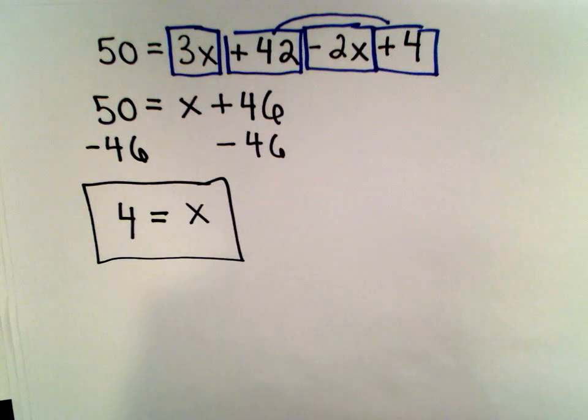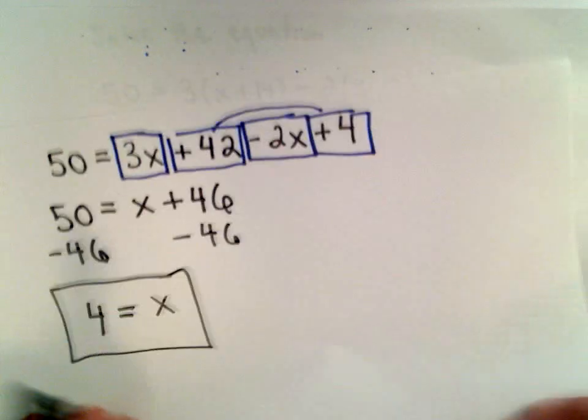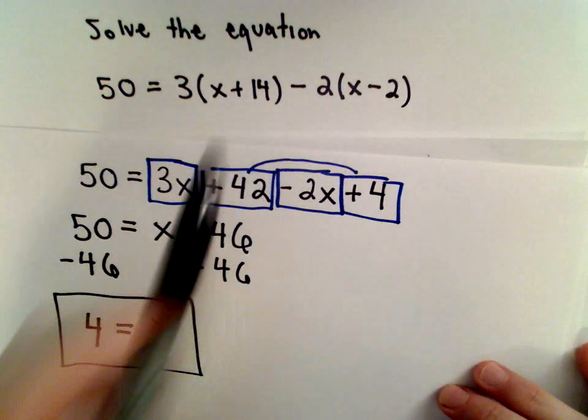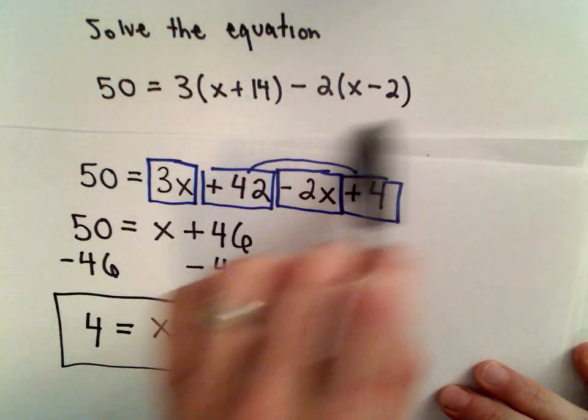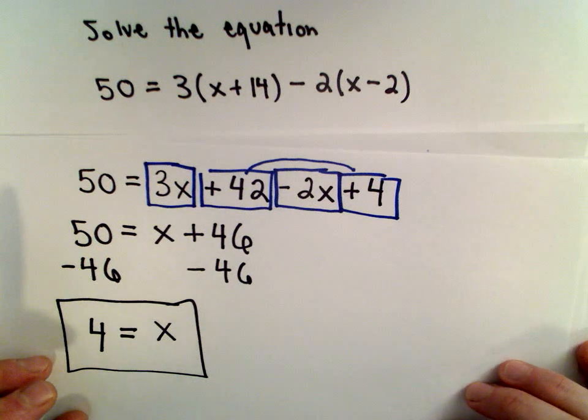It says if we substituted x equals 4 to that original equation, and we do the arithmetic on the right-hand side, we'll end up getting positive 50 as our value.